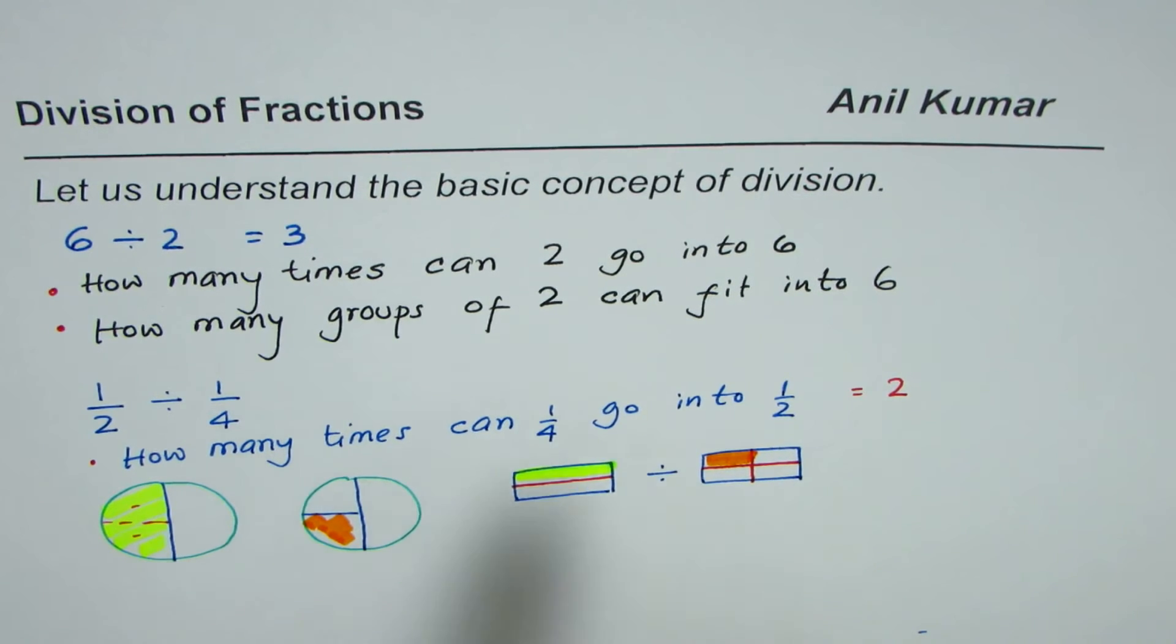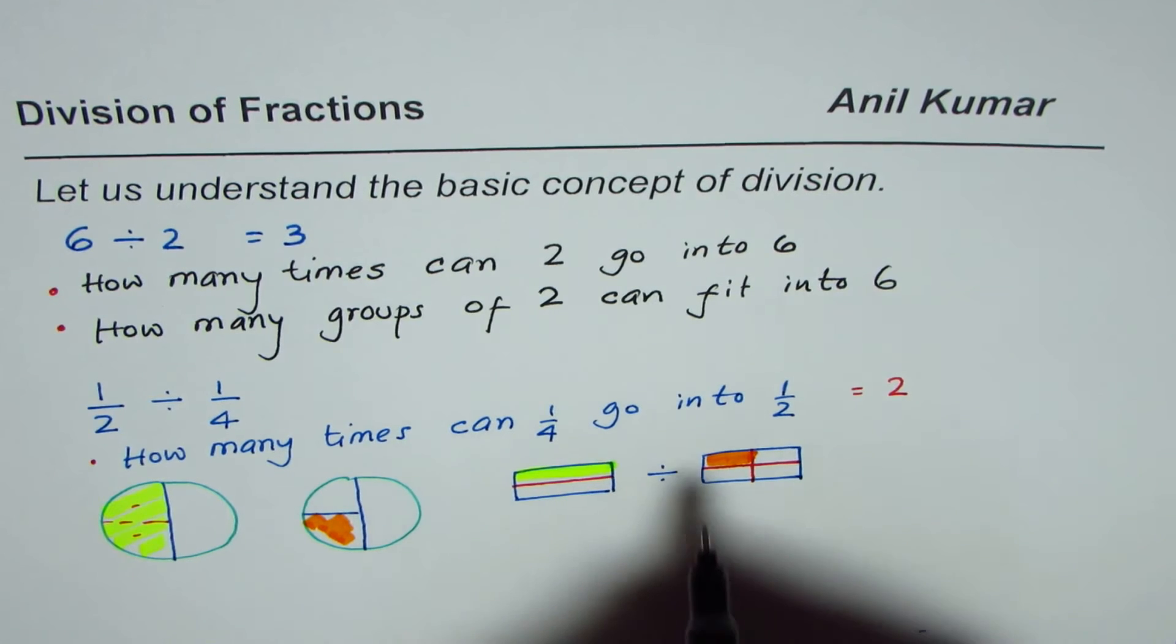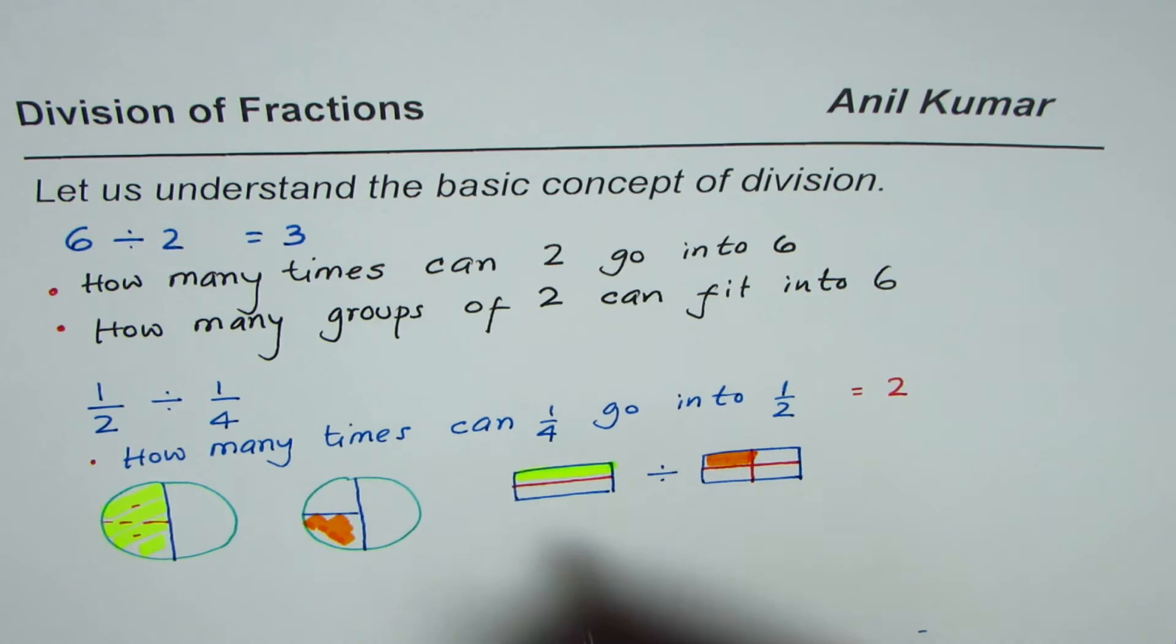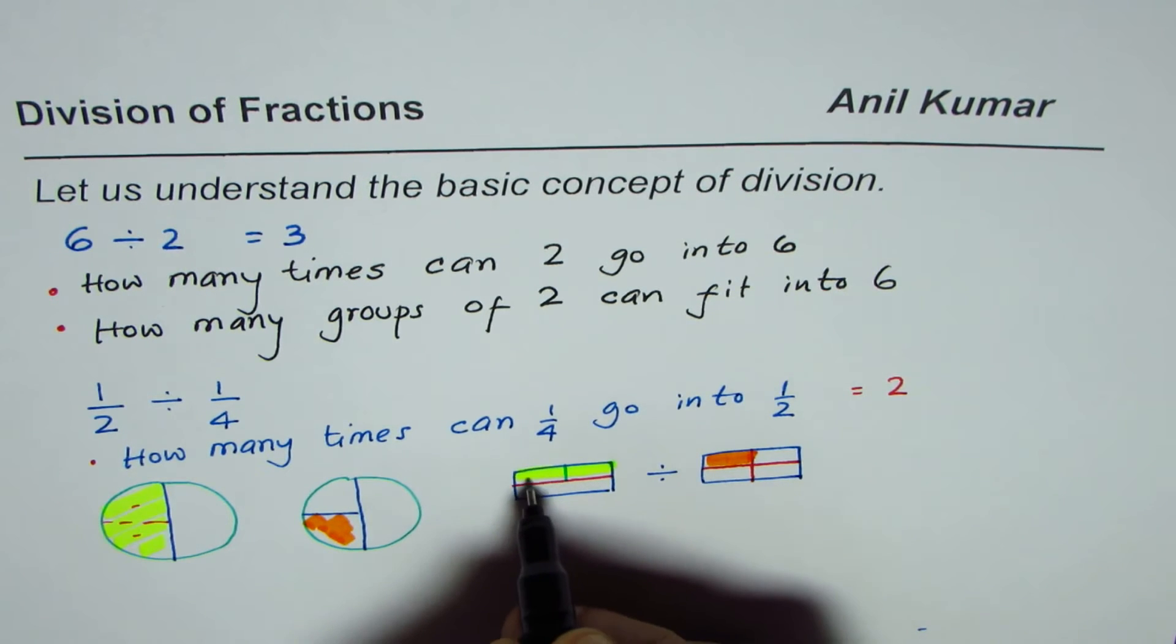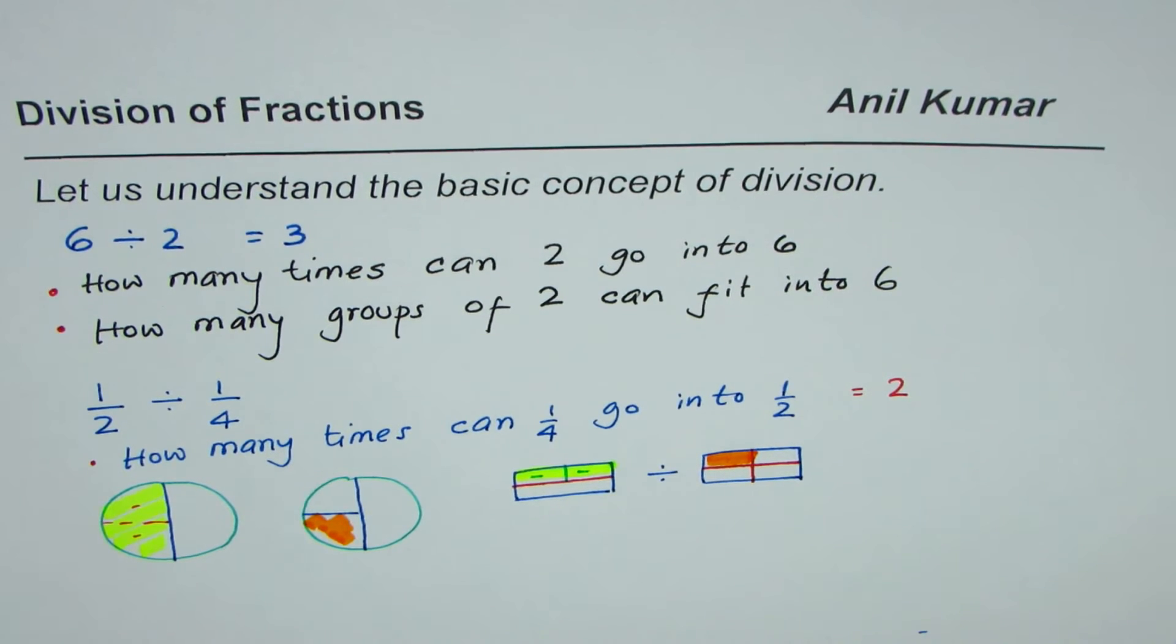Now, the question is: how many times can this go into that? Do you understand now? How many times can 1 fourth go into half? Clearly, 1 fourth could go 2 times. Do you see? 1 and 2. So, if you can fit it, it will go 2 times. And that is how we get our answer, as 2.